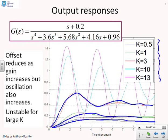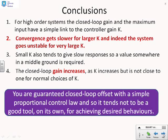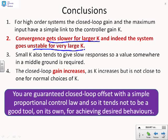Eventually, if K is very large, you will go unstable — which is not something we observed for first and second order systems. It's critical that students recognise that for higher order systems, if you increase K too large, you will get poles in the right half plane and go unstable. For higher order systems, the closed loop gain has a link to the controller gain K, but convergence gets slower for larger K and the system goes unstable for very large K. With small K you get slow responses, so you want a middle ground. As ever, the closed loop gain increases as K increases, but for the sorts of K values that give reasonable convergence, you will have a significant offset. Proportional control alone tends not to be a good tool for achieving desired behaviours, and this is particularly evident with higher order systems.